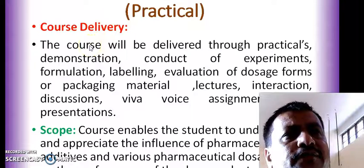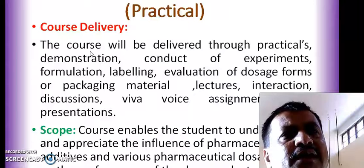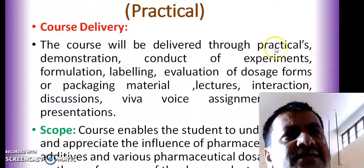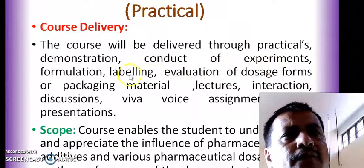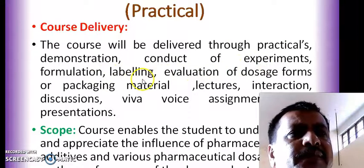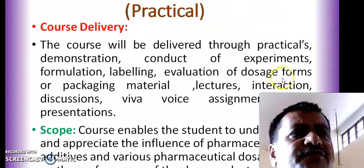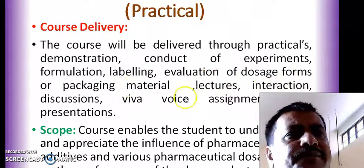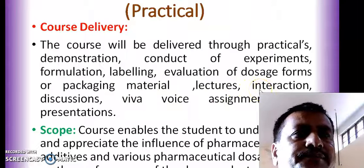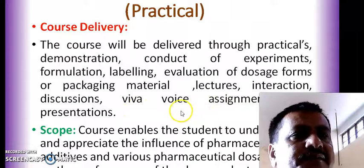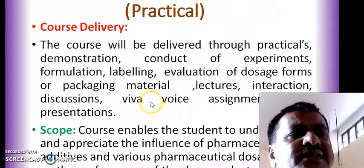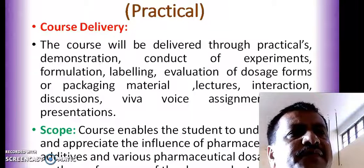The course delivery for Industrial Pharmacy 1 practicals will be through practicals, demonstration, conduct of experiments, formulation, labelling, evaluation of dosage forms or packaging materials, lectures, interactions, discussions, viva voce, assignments, and presentations. These are the various ways by which we are going to deliver the content for Industrial Pharmacy 1 practical.